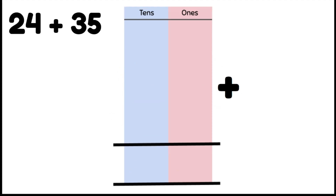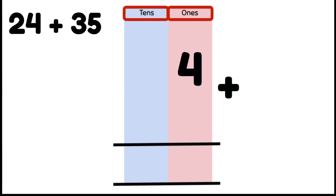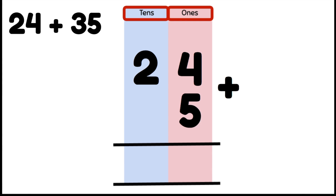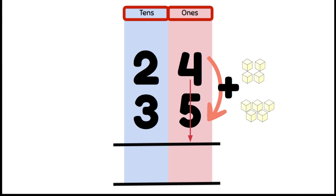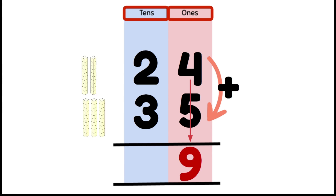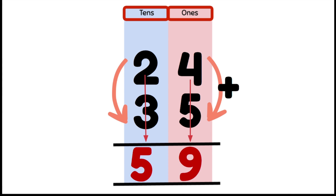Let's try another one — 24 plus 35. We make sure we put our ones in the ones column and our tens in the tens column, and we do this for both numbers. We then add our ones column: four plus five is nine ones. We add our tens: two tens plus three tens gives us five tens. So our answer is five tens and nine ones, which is 59.